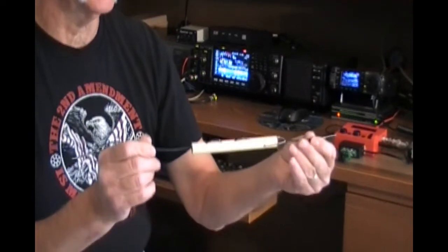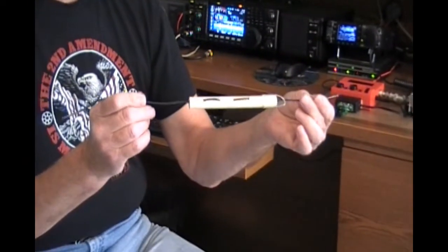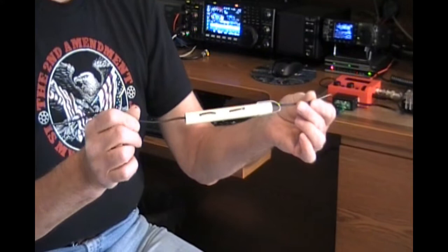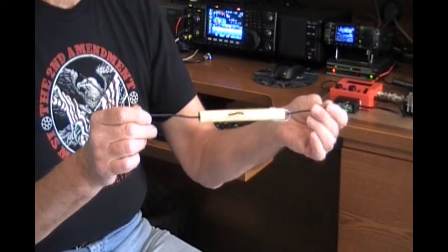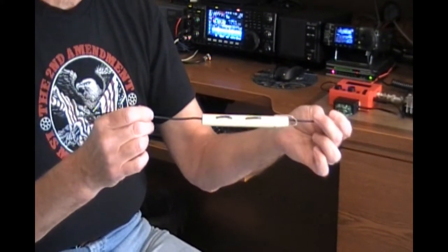Now I use these end insulators on field day antennas for 20 and 15 meters. I also use it on the end of my inverted L, my transmit antenna for 160 meters.